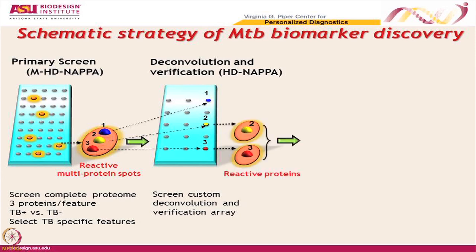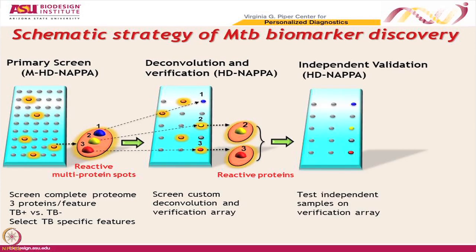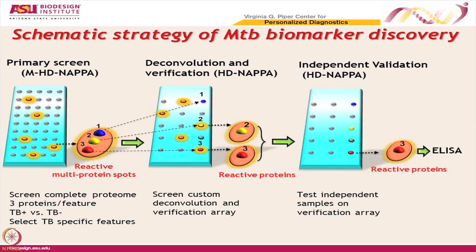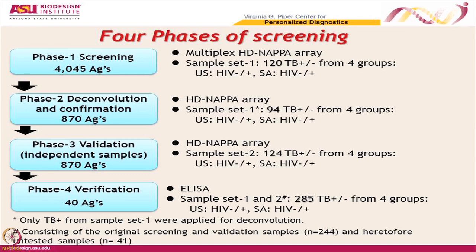We did a separate deconvolution array, and from that we got individual proteins that were positive. Then we did a third level of validation by testing different samples on a verification array, and finally took those individual spots to ELISA — a multi-tiered set of experiments to make sure that whatever hits we observed really made sense. In phase one, we screened four thousand antigens, which is the entire proteome of TB. In phase two, we did a deconvolution on about eight hundred and seventy antigens on an independent set of samples. Then we did an ELISA verification on the best forty of all those.